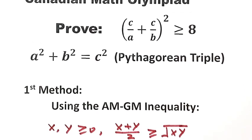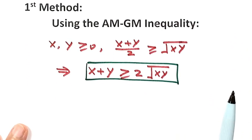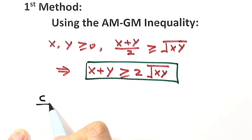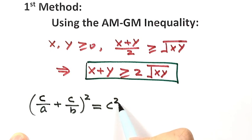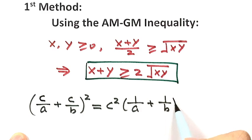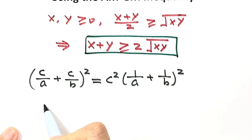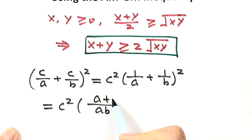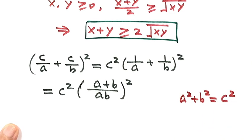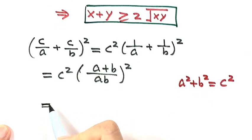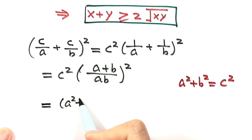Now let's start from the left-hand side of the inequality: (c/a + c/b)². First, take out c, giving c²(1/a + 1/b)². Next, inside the parentheses use a common denominator, so we get c²·(a + b)²/(ab)². Because a² + b² = c², use a² + b² to replace c².